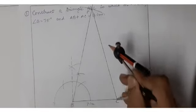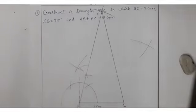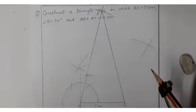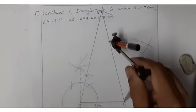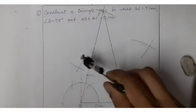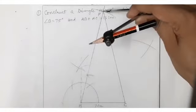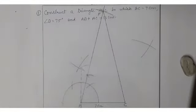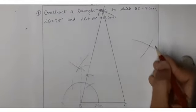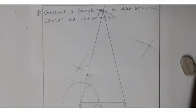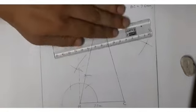For the perpendicular bisector of DC, open the compass more than half of DC. Now I am making the perpendicular bisector — I have opened more than half and am cutting one arc from this side and one arc from the other side. Similarly from point C also, one arc on each side. You will get two intersecting points, then join them with help of scale.